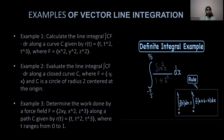Example one: calculate the line integral ∮C F·dr along curve C given by r(T) = (T, T², T³), where F = (x², y², z²). Example two: evaluate the line integral ∮C F·dr along the closed loop where F = (−y, x) and C is a circle of radius two centered at the origin. Example three: determine the work done by force field F = (2xy, x²) along path C given by r(T) = (T, T², T³), where T ranges from 0 to 1.